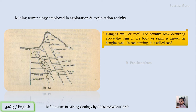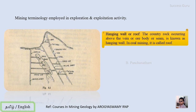The next term is the hanging wall or roof. If we consider a metal deposit which is a bed, ore body, vein, or sink, the rock lying above the metal deposit is called the hanging wall or roof — in coal mining it is called the roof, and for any other mineral deposit it is called the hanging wall. The rock lying below the mineral deposit is called the foot wall.